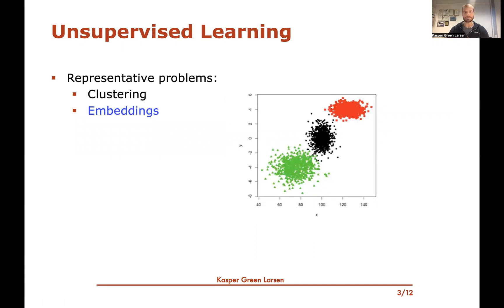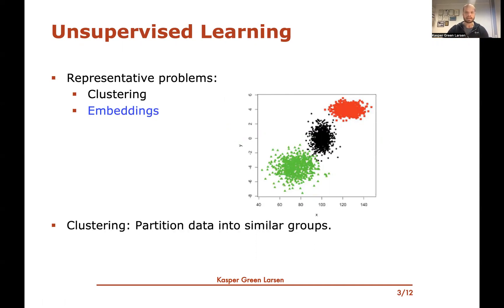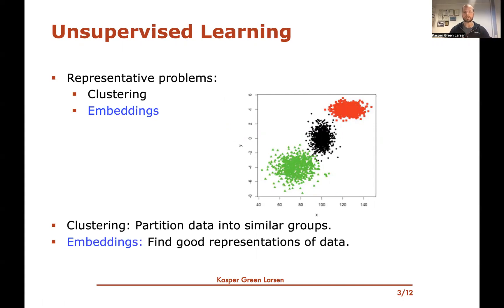From this video and the next couple of videos, we'll shift to unsupervised learning, which was mentioned briefly in the beginning. In unsupervised learning, there are many different representative problems — one being clustering and another being embeddings. Embeddings will be the focus of these videos. From clustering, the basic idea was to partition data into similar groups, whereas in embeddings we're looking for a good representation of input data.